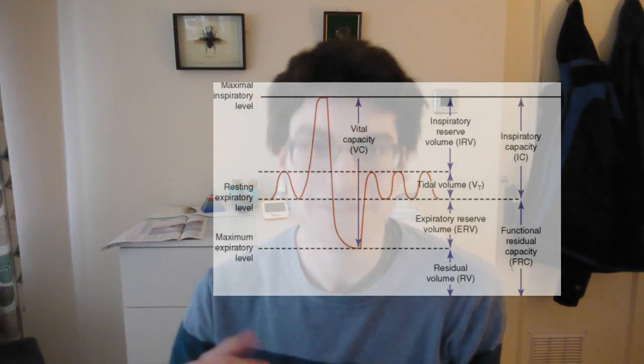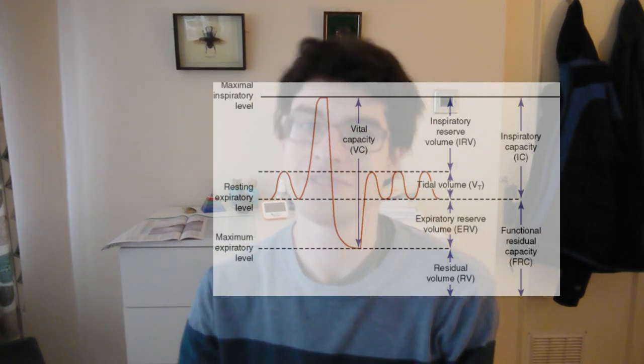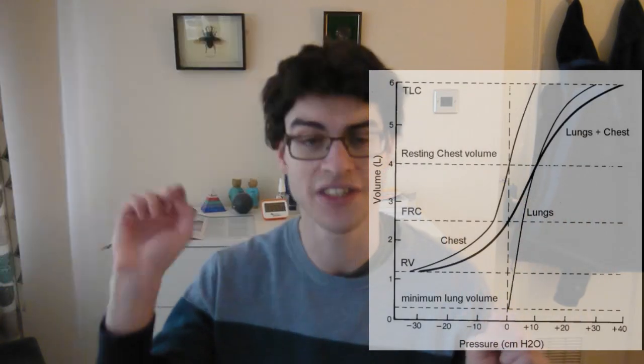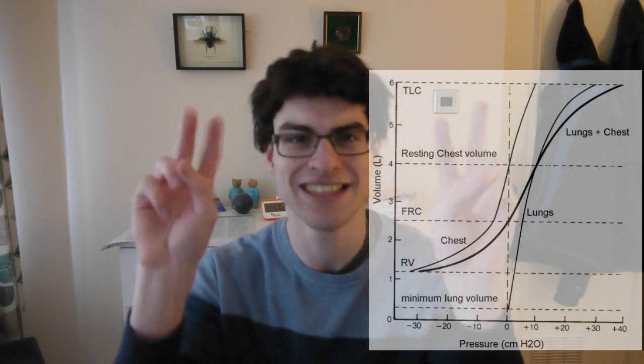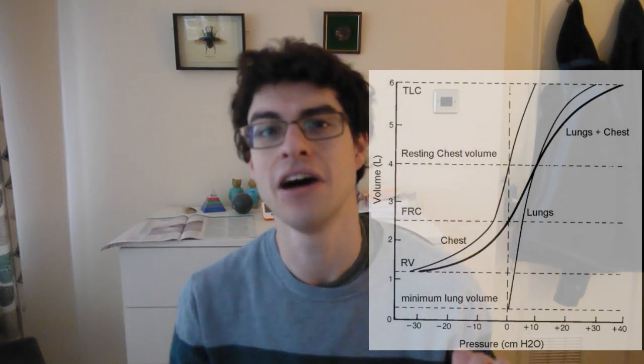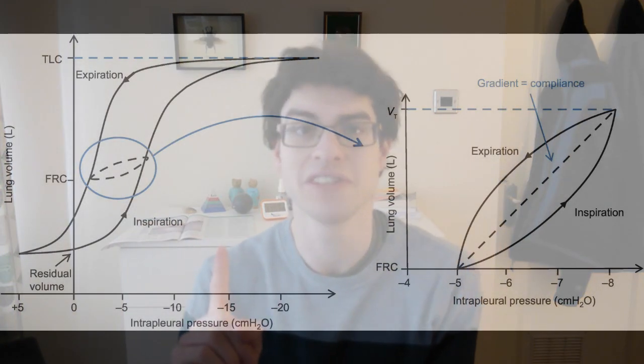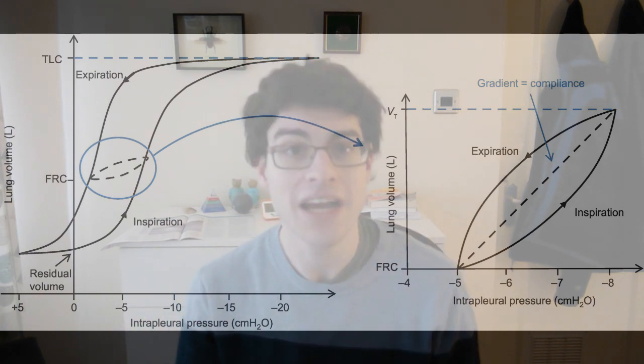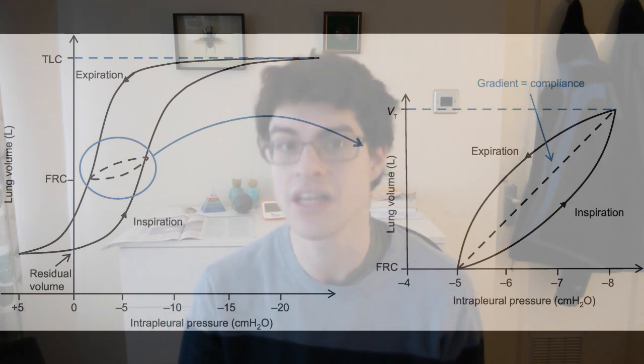Functional residual capacity is very important for a number of reasons. First, it represents the point at which the elastic recoil force of the lung equals the elastic recoil force of the chest wall — it's therefore the resting state of the lung. Second, it's very representative of compliance. If you increase the functional residual capacity, you'll also increase compliance. Compliance is a measure of the stiffness of the lungs.